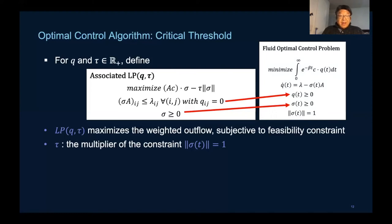This constraint is promoted to the objective with a multiplier tau, and the multiplier tau that ensures the constraint is tight will then be called critical threshold, in which case we have a work conserving system.